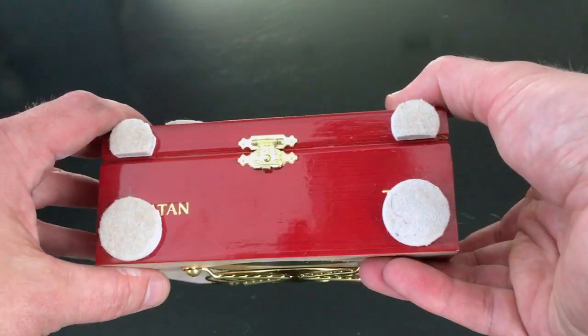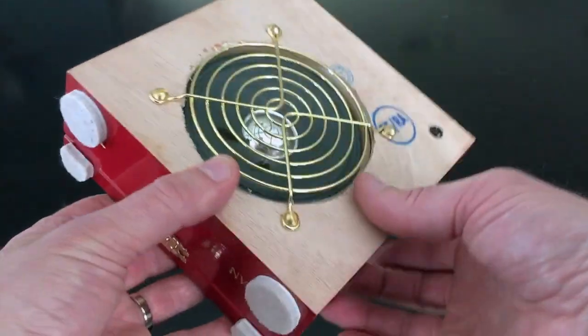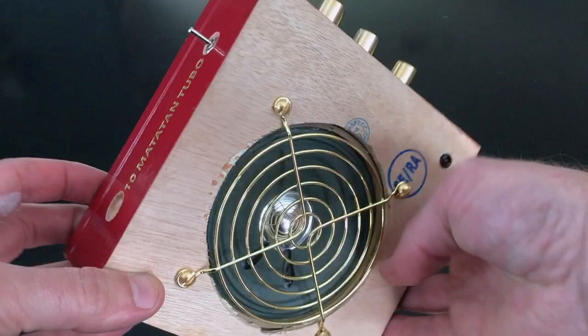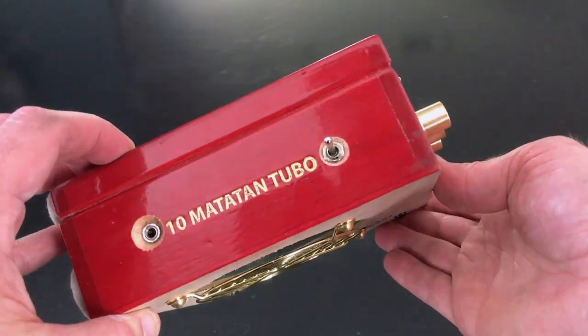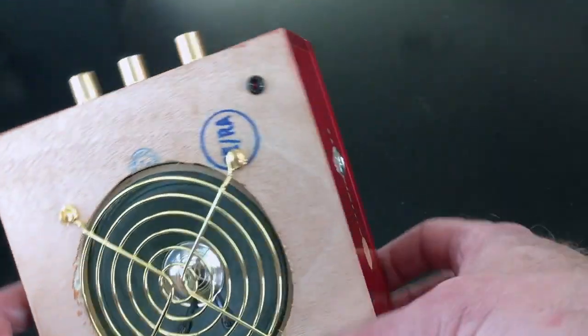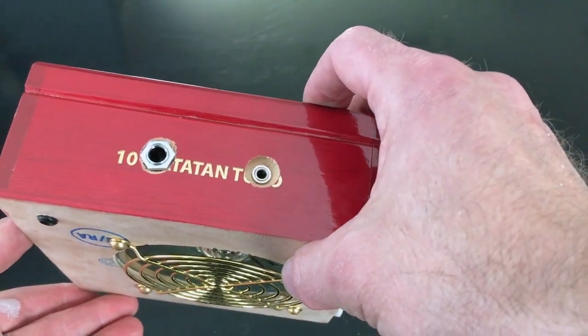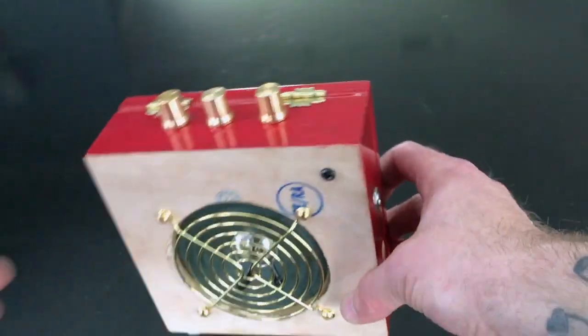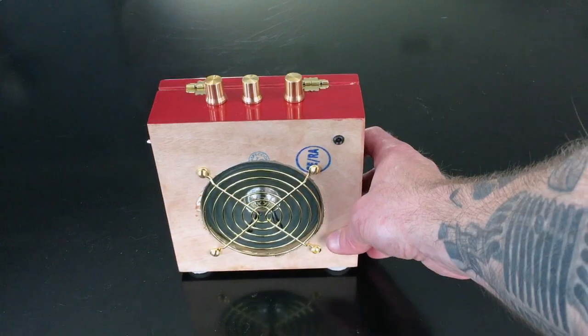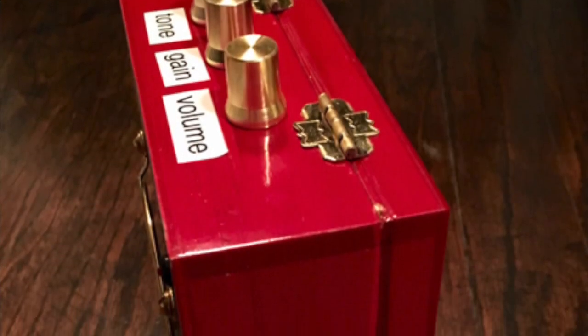And you see there's some feet on the bottom, a latch, we've got a grill here, we've got an eighth inch jack and a power switch there, three knobs across the top, we've got a quarter inch jack and an eighth inch jack on the side. I do need to put some labels on here to label all of these so we can see what's what.